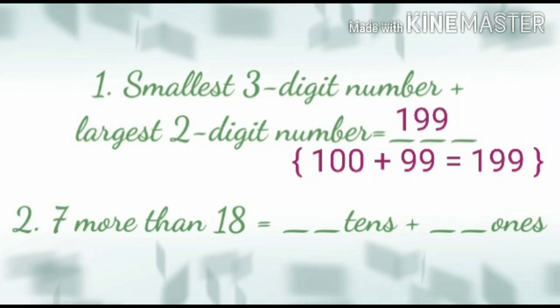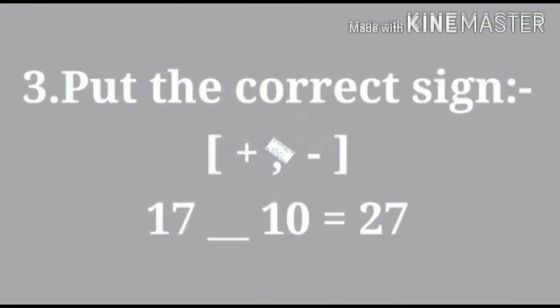Now, question number 2 is 7 more than 18. Means we have to do the addition. So, 7 plus 18 is 25. Now, question number 3 is put the correct sign, that is plus or minus. So, 17 plus 10. If we do, we get the answer 27.